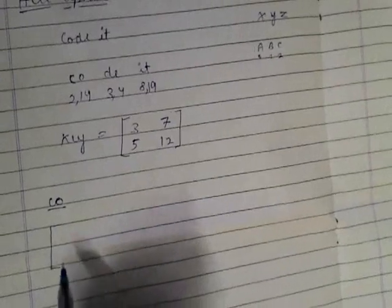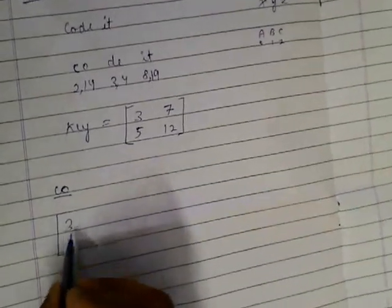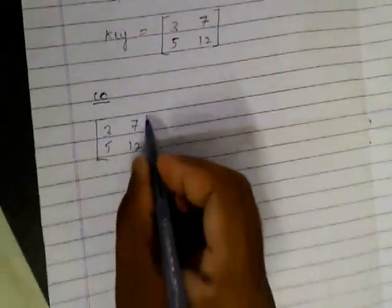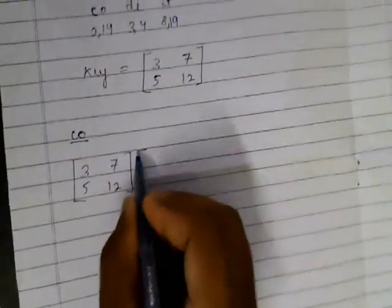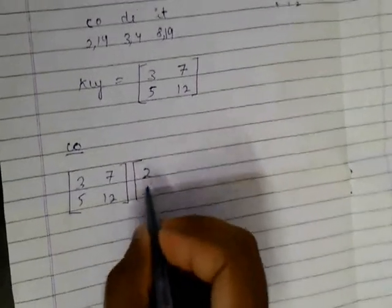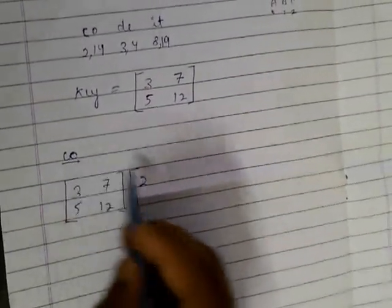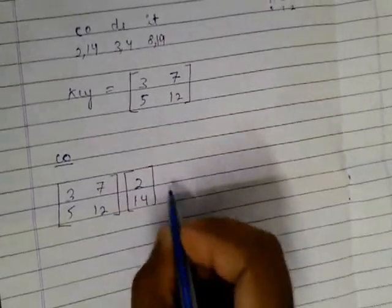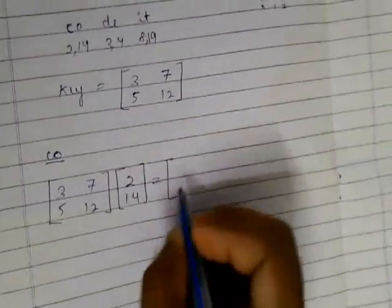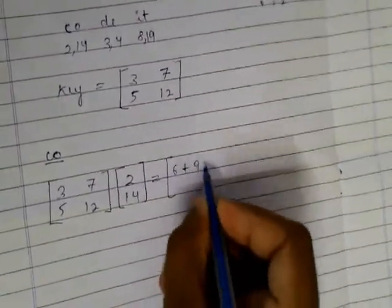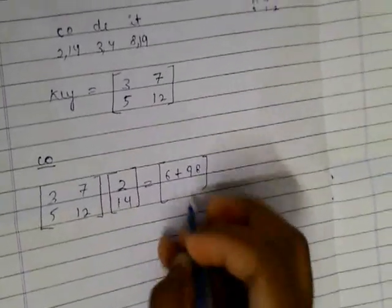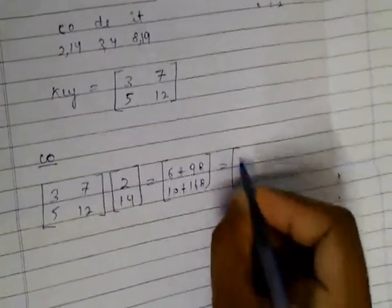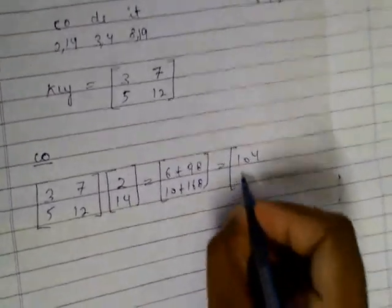Now what we have to do: we have to find for the block C-O. In this, what we will do is design a matrix, that is 3, 5, 7, 12, and we multiply with the elements of C-O. That is 6 plus 70 equals 76, and 14 plus 168 equals 182.